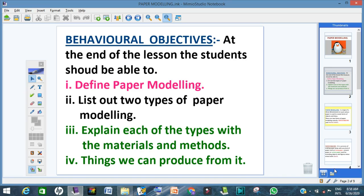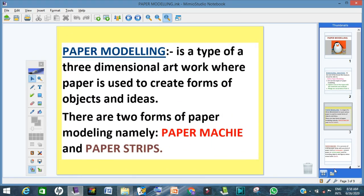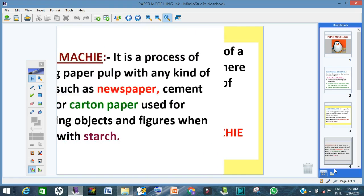Paper modeling is a type of three-dimensional artwork where paper is used to create ideas and forms. What are the two types of paper modeling? We have paper mache and paper strips.